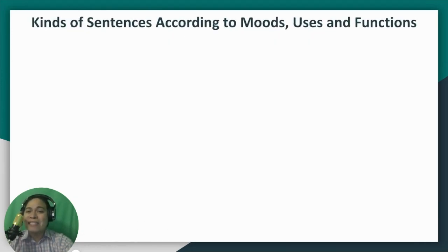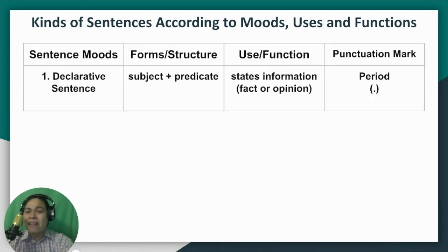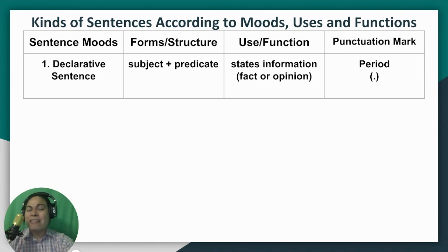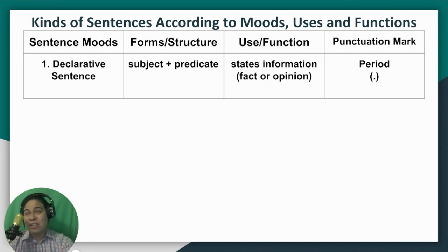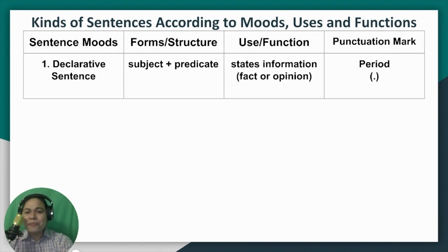There are four kinds of sentences according to moods, uses, and functions. Let us start with declarative sentence. From the word declare, you are declaring something. We form it by using the subject and the predicate — simply those two parts. Its use and function is very important to know. Declarative sentence is used to state information, and this information can be a fact or an opinion.